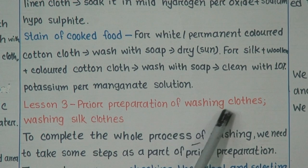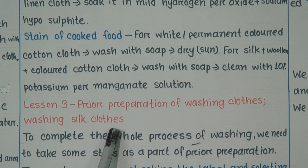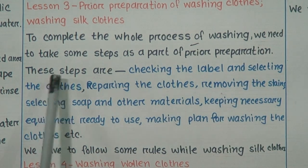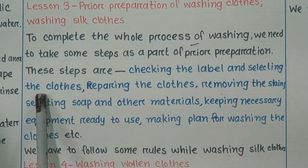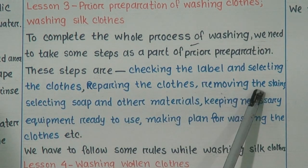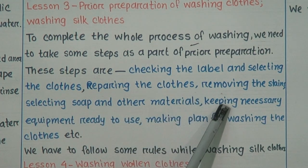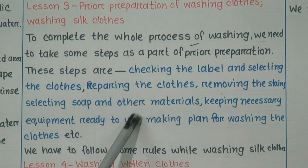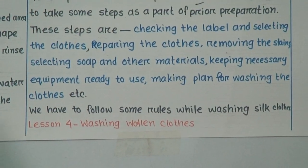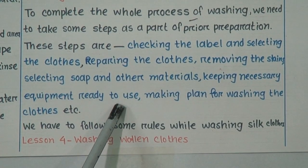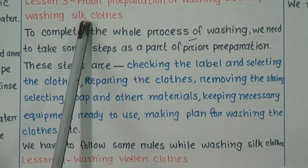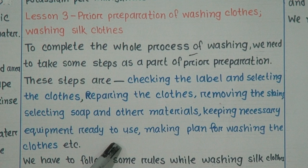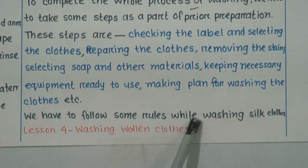Lesson 3: Preparation of washing cloths and washing silk cloths. To complete the whole washing process, we need to follow preparatory steps: checking the label and selecting the cloths, repairing the cloths, removing the stains, selecting soap and other materials, keeping necessary equipment ready, and making plans for washing. By following these steps, our cloths will be neat and clean. We also need to follow some rules while washing silk cloths — please read your textbook for details.